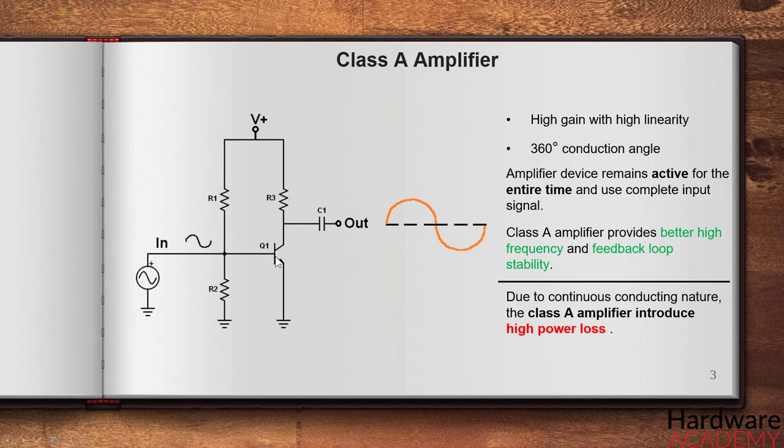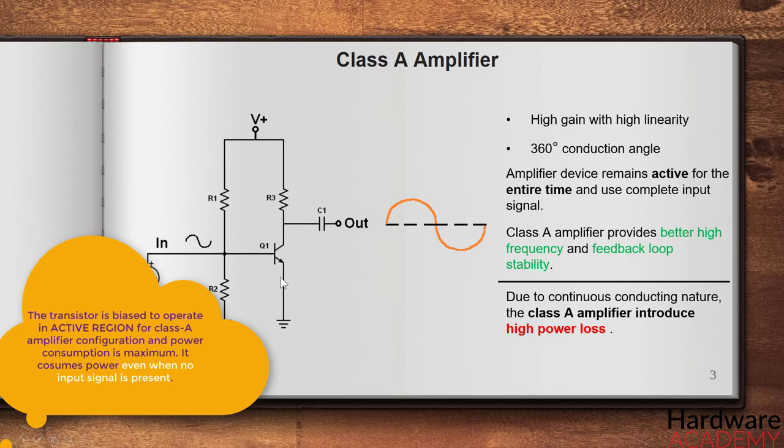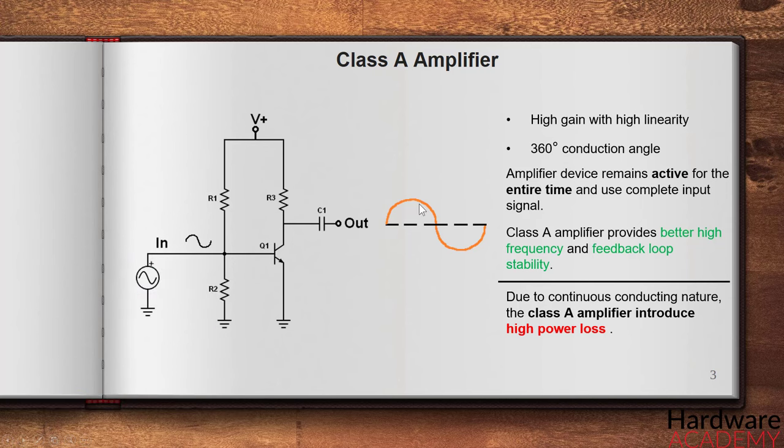Due to continuous conduction nature, the class A amplifier introduces high power loss. Also due to high linearity, class A amplifier provides distortion and noises. The power supply and the bias construction need careful component selection to avoid unwanted noise and to minimize the distortion.